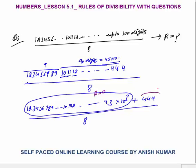444 ÷ 8: 8×55 = 440, so the remainder is 4. The final remainder is 0 + 4 = 4. So the answer is 4. The main idea in this type of question — even if it's 16 digits or 1000 digits — is the same: calculate which number fills the last digits, take the last 3 digits, and check divisibility by 8. So the answer is 4.